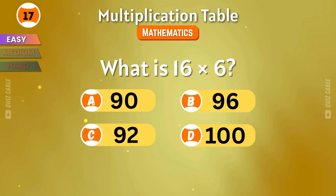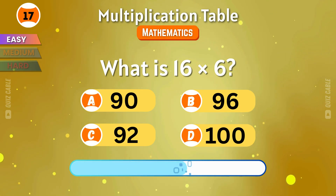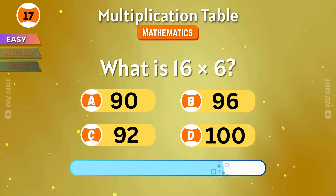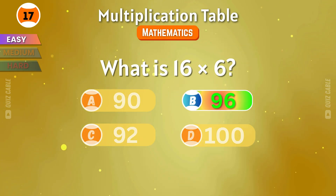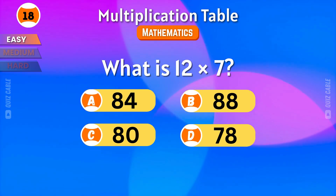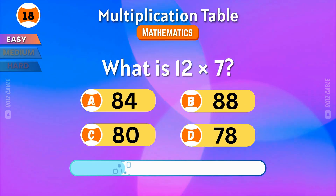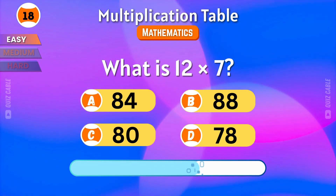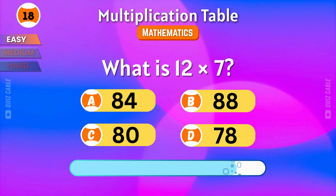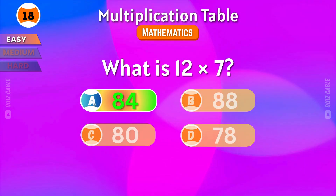What is 16 times 6? A perfect 96! What is 12 times 7? The answer is 84!